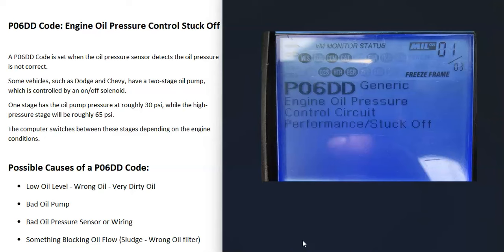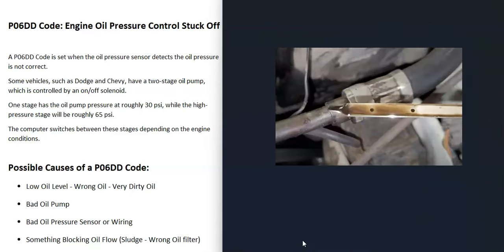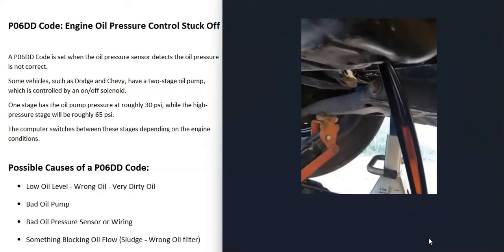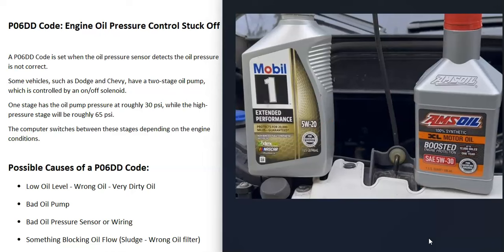What are some possible causes of a P06DD code? Well, the first thing that could cause this is low engine oil. Go check your engine oil and be sure it's at the correct level and not too low. Another thing that could cause this is very dirty engine oil, which can start to clog things up, like the variable valve timing. Also, if the wrong engine oil is used — specifically a thicker oil than what's rated for the engine — that can cause issues too.